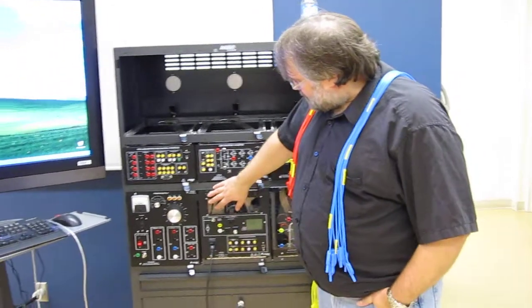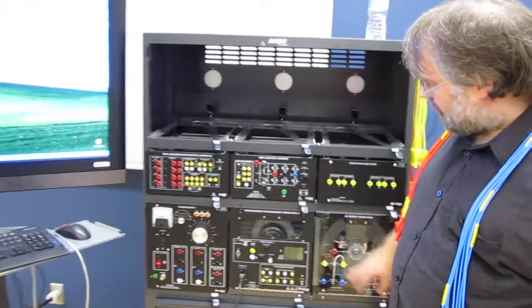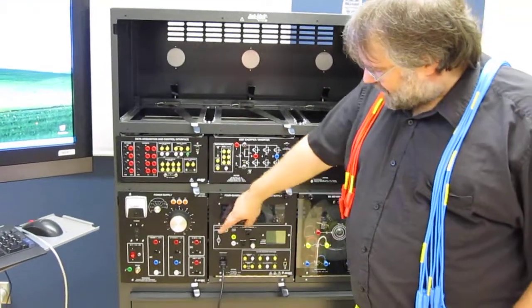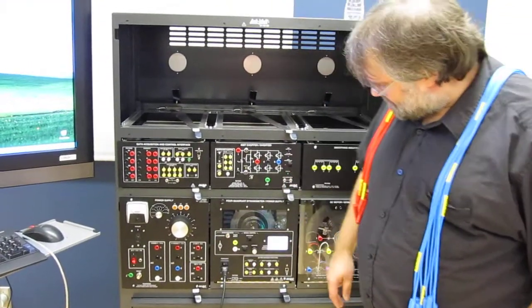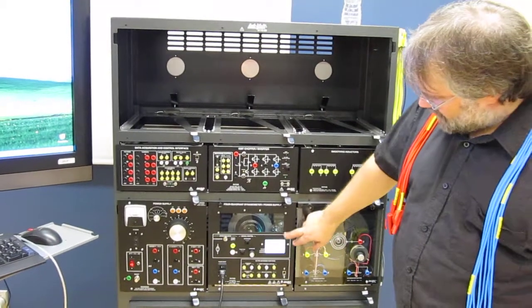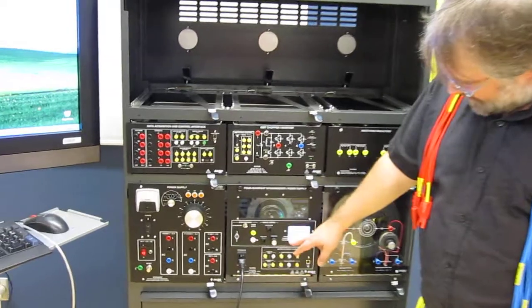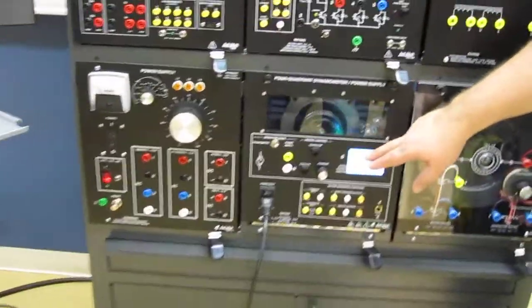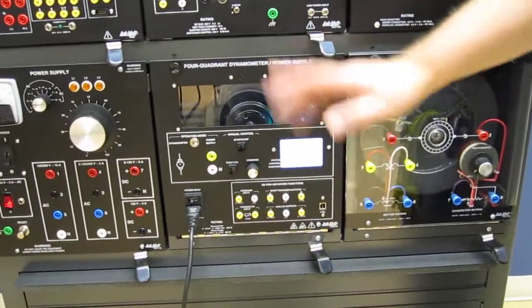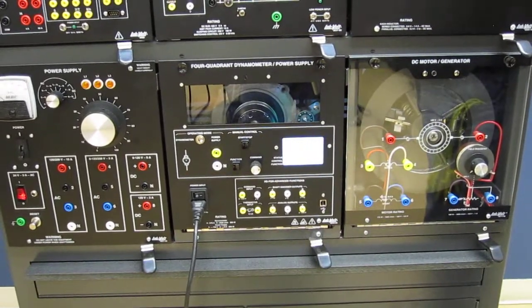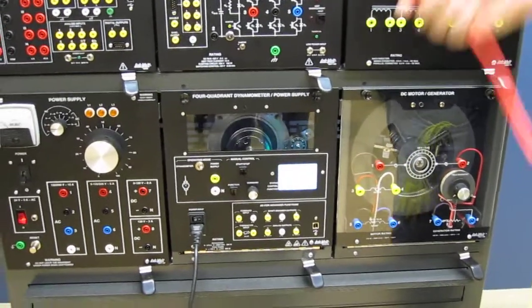To do that, I will use the four quadrant dynamometer power supply as a power supply in this case. I want it to be in voltage mode source, voltage source positive. Right now it's around 50 volts, that should be good enough for what I want to do. So I'll take power from here.